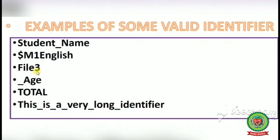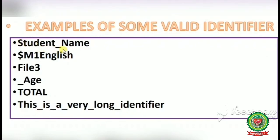Number 4 is also a valid identifier example. Number 5: 'TOTAL' — the full word in capital letters is also valid. Number 6: 'this_is_a_very_long_identifier' — it consists of very long length and is also a valid identifier. You can use underscore at the start, start with a dollar sign, or put a digit in between — these are all different examples of valid identifiers.